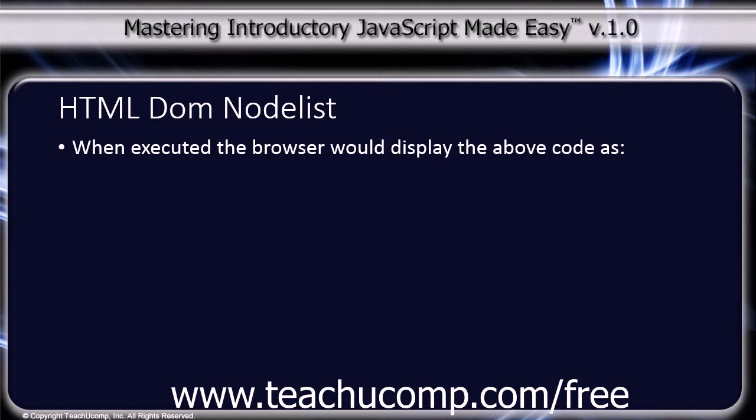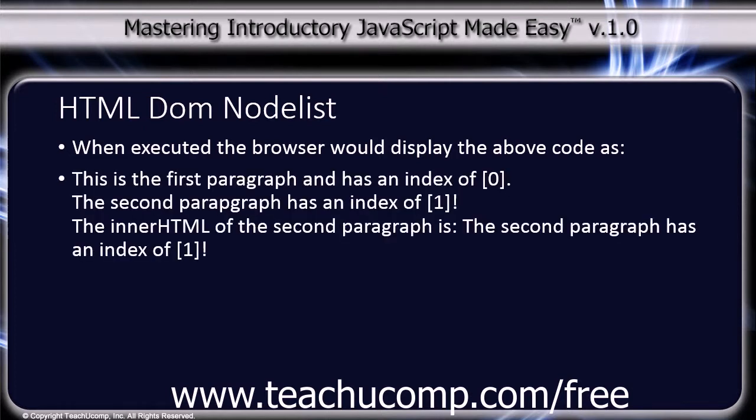When executed, the browser displays: 'This is the first paragraph and has an index of 0. The second paragraph has an index of 1.' And the innerHTML of the second paragraph is: 'The second paragraph has an index of 1.'